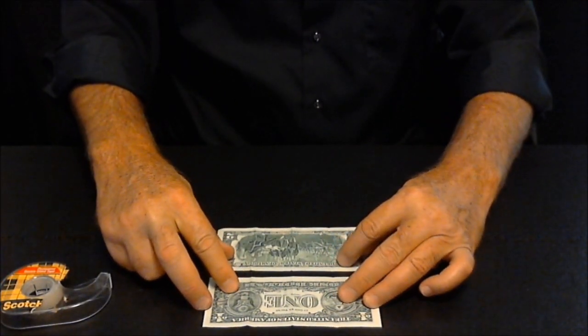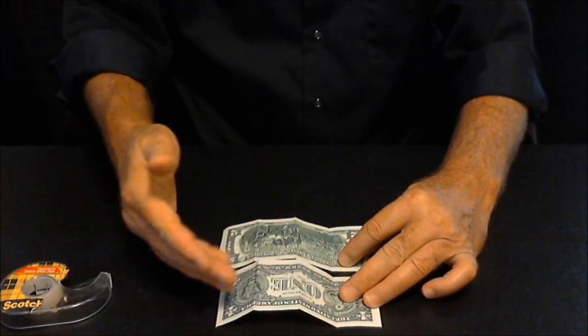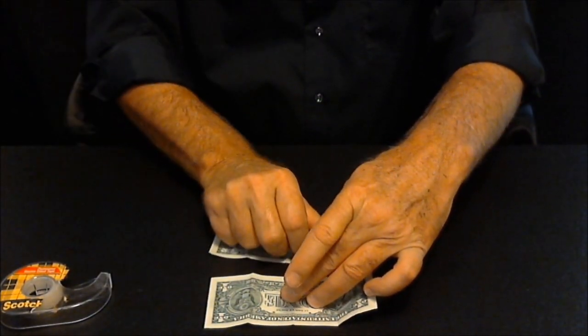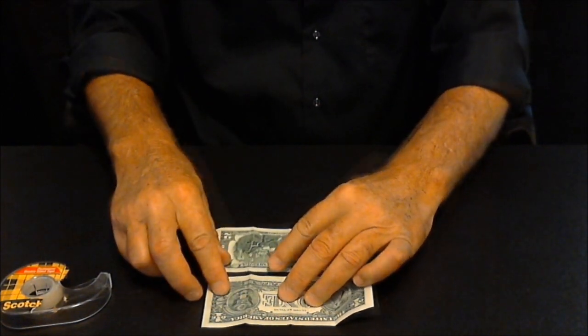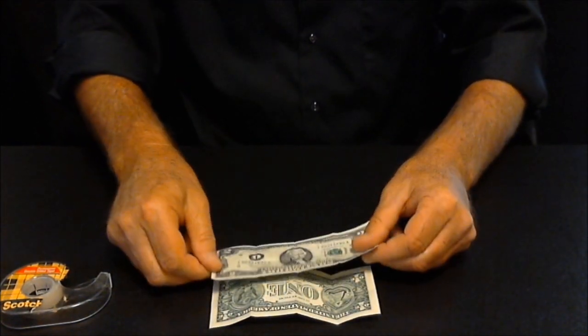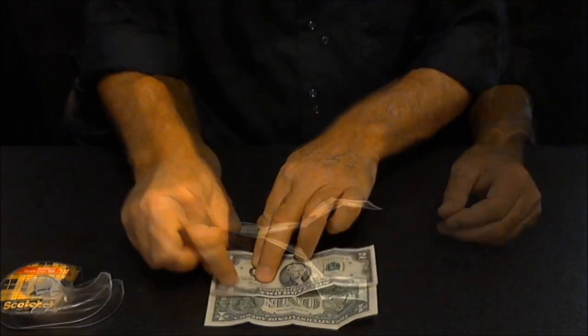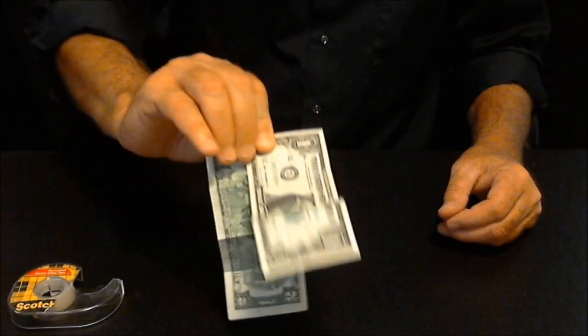Position both bills so they're facing down and right side up. Meaning one is not upside down to the other. Take the two dollar bill and just turn it over and that's where you tape it. This is how they're going to go together.